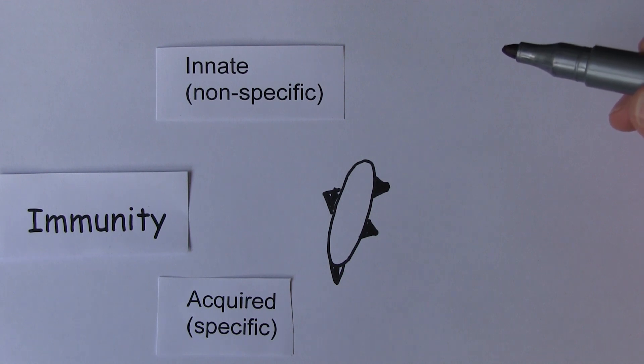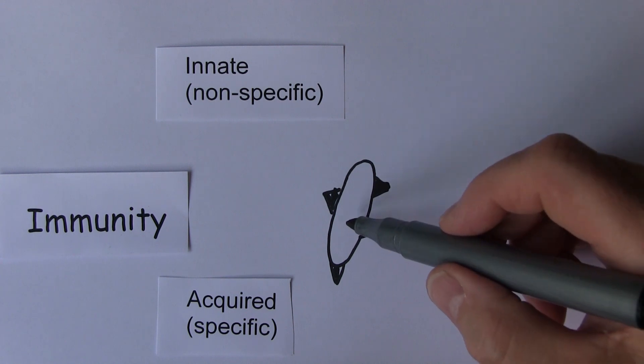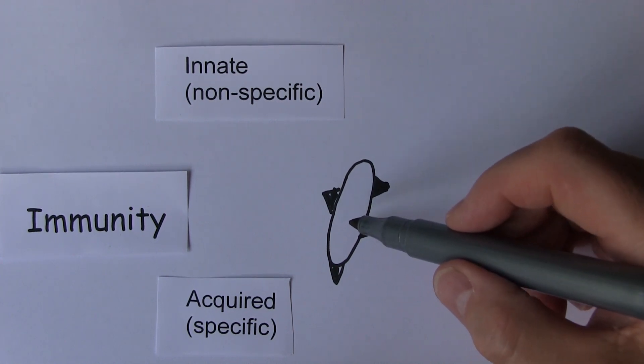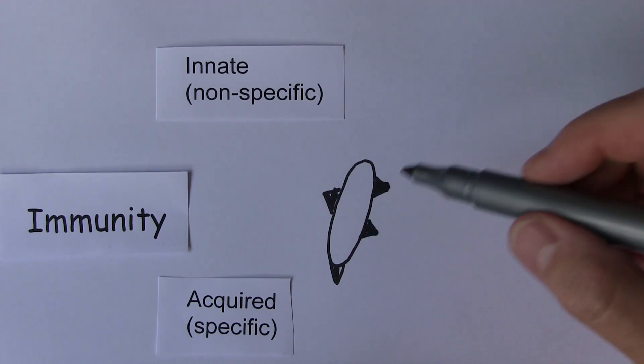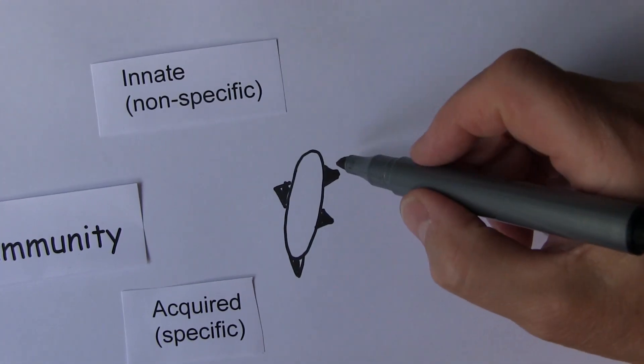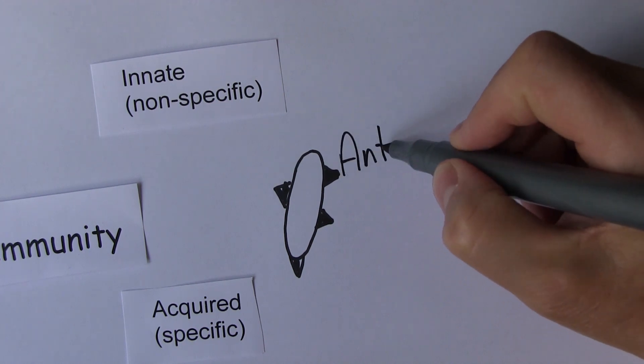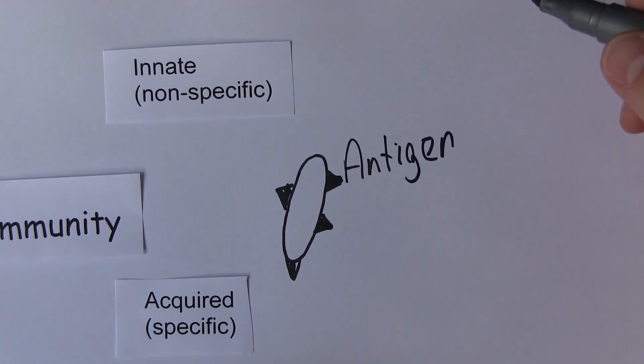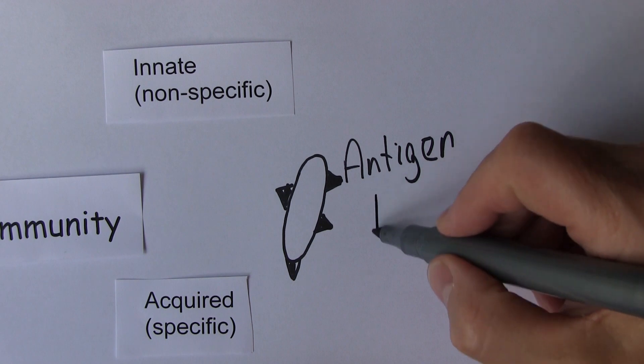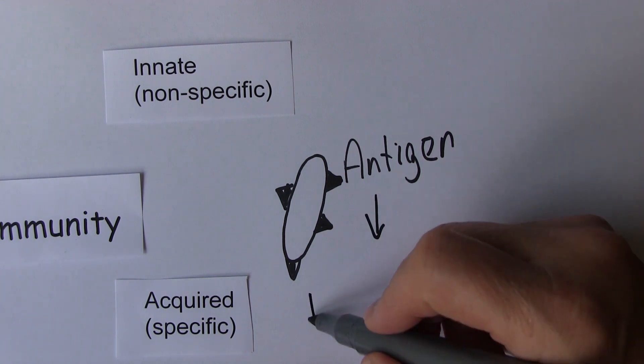So what we need to do is mount an immune response, which will attack this specific microorganism and eradicate this specific microorganism. So this microorganism acts as what we call an antigen. It's an antigen. Now antigen is short for antibody generating molecule. Because an antigen will cause the formation of an antibody.